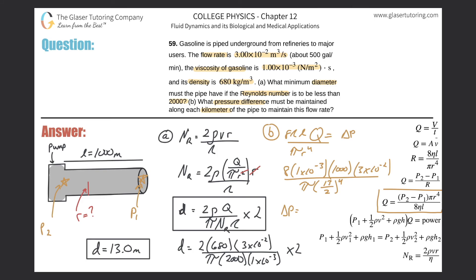The result is ΔP = 4.28×10⁻⁵ Pascals — an extremely small pressure differential. This makes sense because the pipe is so large at 13 meters in diameter. Thanks for watching; please remember to subscribe!